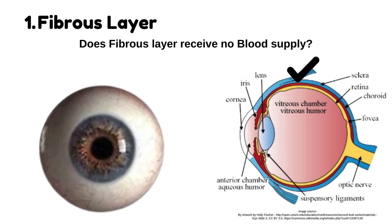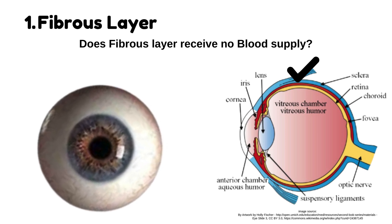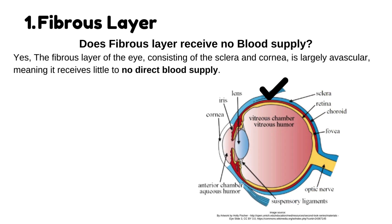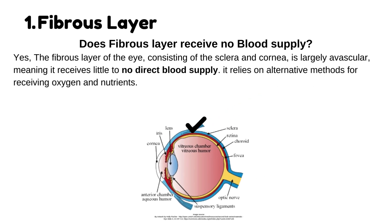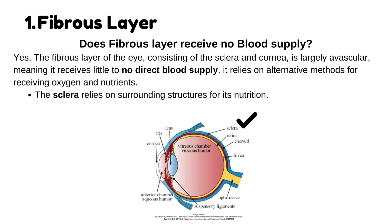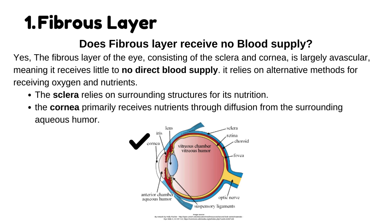Does the fibrous layer receive no blood supply? Yes, the fibrous layer of the eye, consisting of the sclera and cornea, is largely avascular, meaning it receives little to no direct blood supply. It relies on alternative methods for receiving oxygen and nutrients. The sclera relies on surrounding structures for its nutrition, while the cornea primarily receives nutrients through diffusion from the surrounding aqueous humor.